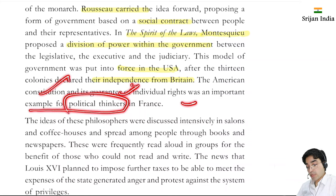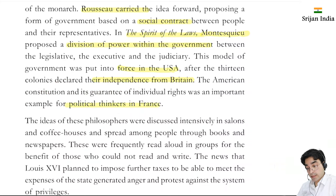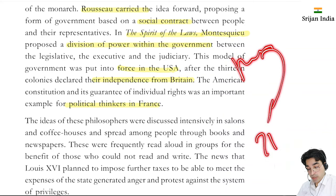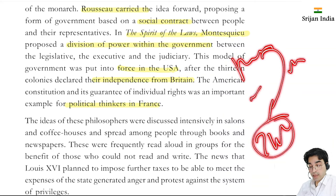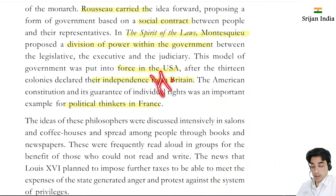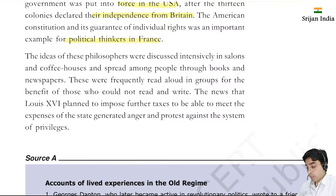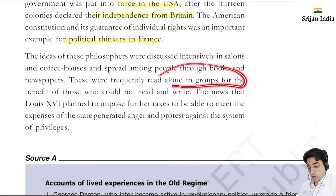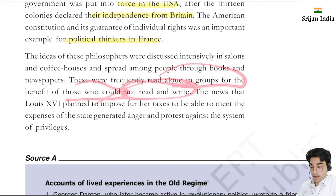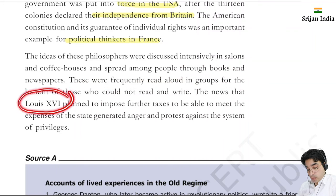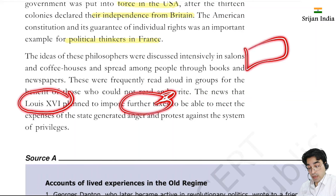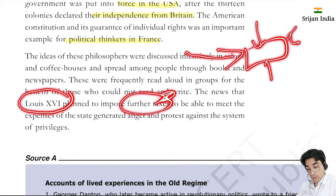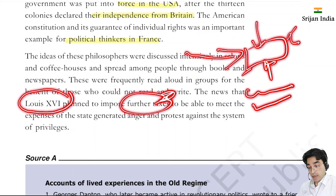The American Constitution's guarantee of individual rights was an important example of this political thinking. This shows how 18th century French history determines ideas and everything in the 21st century world - that is why it is necessary to study history. The ideals of these philosophers were discussed intensively in salons and coffee houses, and spread everywhere through books and newspapers. People became more aware. The news that Louis XVI planned to impose further taxes - his treasury was empty because of extravagant spending.